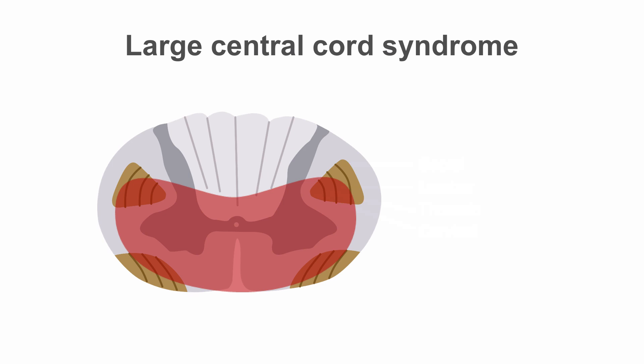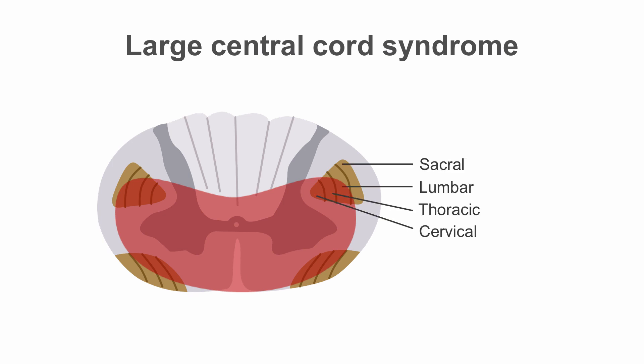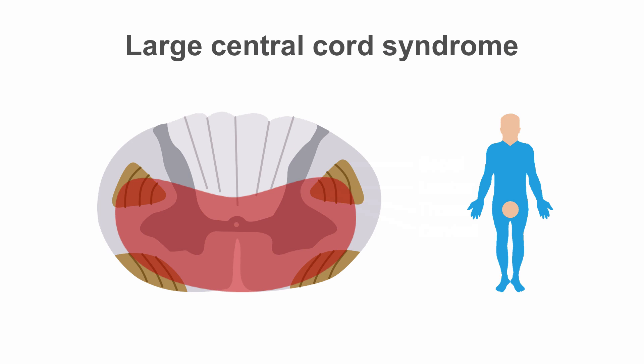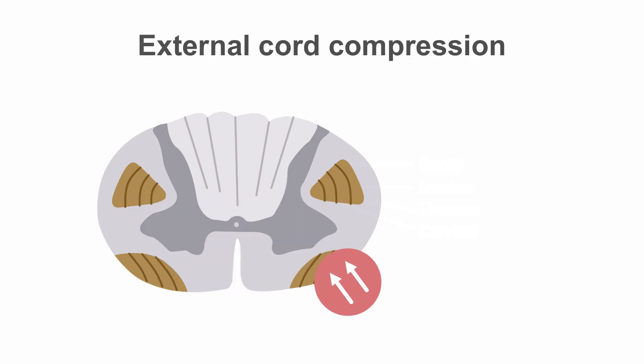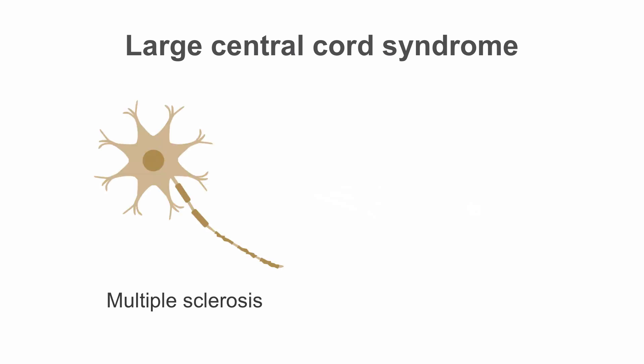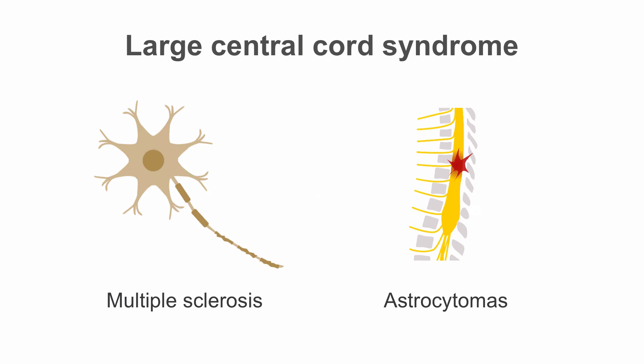With some central cord lesions, because of the somatotopic patterns of sensory fibers, the sensory loss pattern might produce clinical phenomena of sparing sacral fibers from sensory loss. In contrast, lesions or masses externally compressing the cord — seen for instance with spinal metastases — often involve sacral spinothalamic tract fibers, producing sacral anesthesia. This can be an important clue to extraaxial lesions versus intraaxial lesions inside the spinal cord. Large central cord syndrome is commonly seen with multiple sclerosis or tumors of the cord, such as astrocytomas.